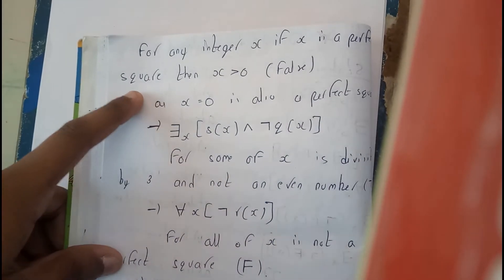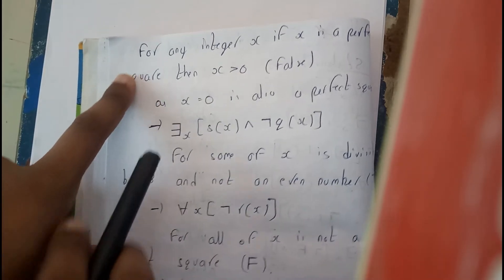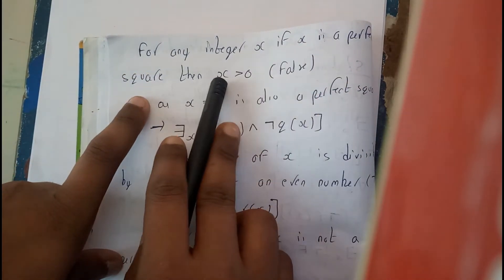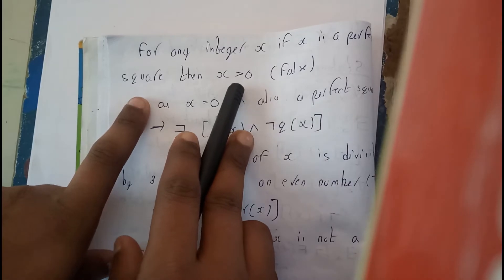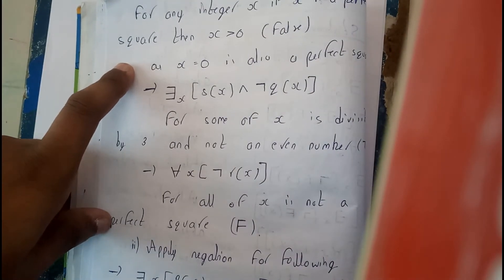No, it's not true always. Even zero. Zero is a perfect square and zero is not greater than zero. Hence, this is false. Like that. You need to write the statement and say whether it is true or false.